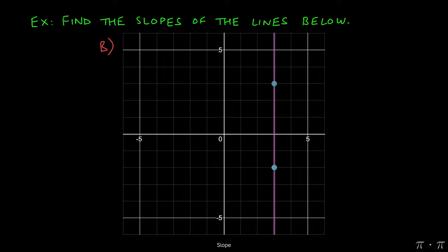Moving on to the second example, here we see that we have a vertical line that passes through three comma negative two and three comma three. Here again, we're looking for the slope. So we're looking for the ratio of rise to run.